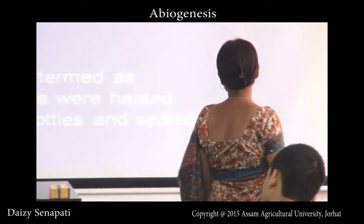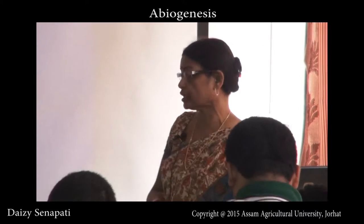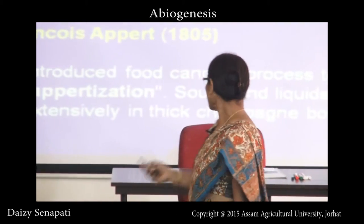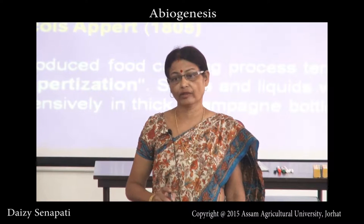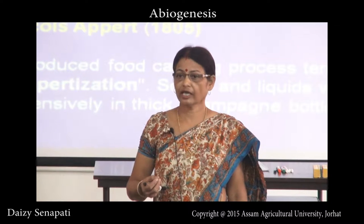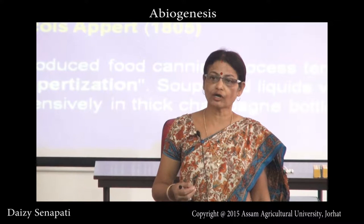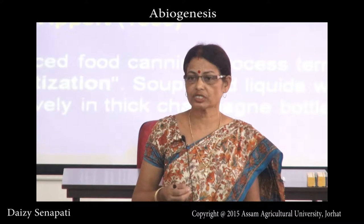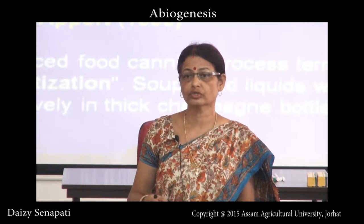Francois Appert came in the year 1805 and introduced the food canning process, known as Appertization. He was a wine maker who sterilized wine in thick glass bottles. His wines were free of any microorganisms, and this was the beginning of the canning process — a method of sterilization and preservation of fruit juices, soups, wines, etc.